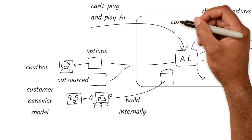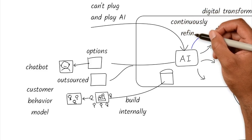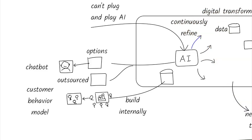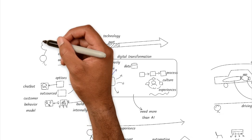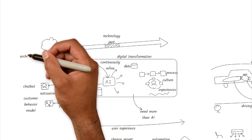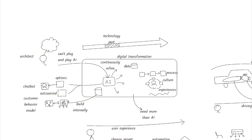You need to embed it into your systems, train it on your data, and continuously refine it. That's why the role of architecture and integration is so critical, because AI doesn't live in isolation.